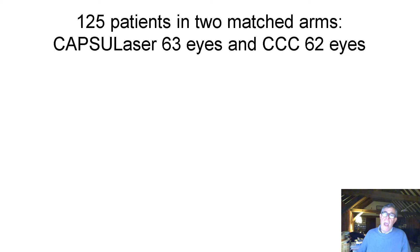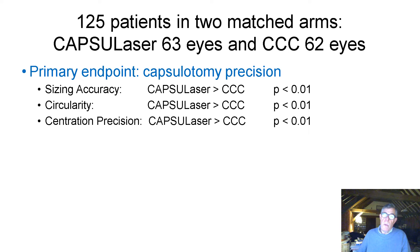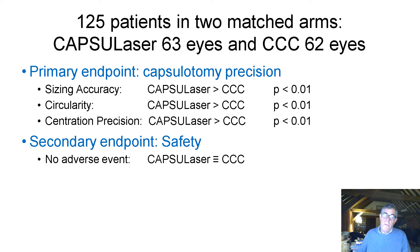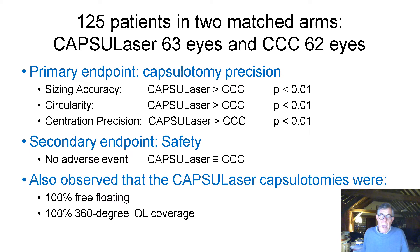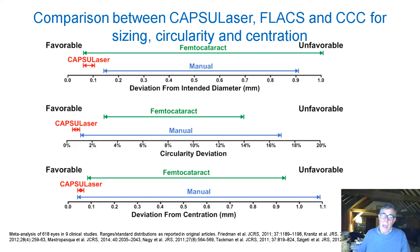We looked at another study comparing two matched groups of eyes: 125 patients, 63 eyes treated with Capsulase and 62 with CCC. The primary endpoint was capsulotomy precision, which was statistically better for sizing accuracy, circularity, and centration precision. The secondary endpoint of safety showed no adverse events for either method, and Capsulase capsulotomies were 100% free-floating with 360-degree IOL coverage. A meta-analysis comparing available literature for femto and manual with Capsulase showed that Capsulase appeared much more favorable than either of the other modalities.